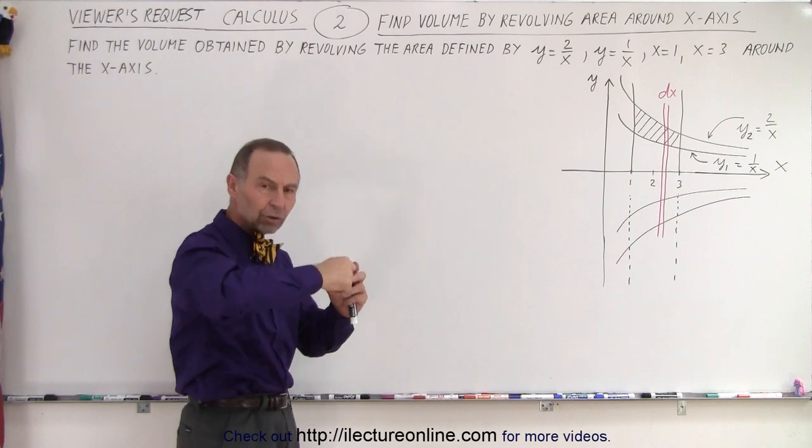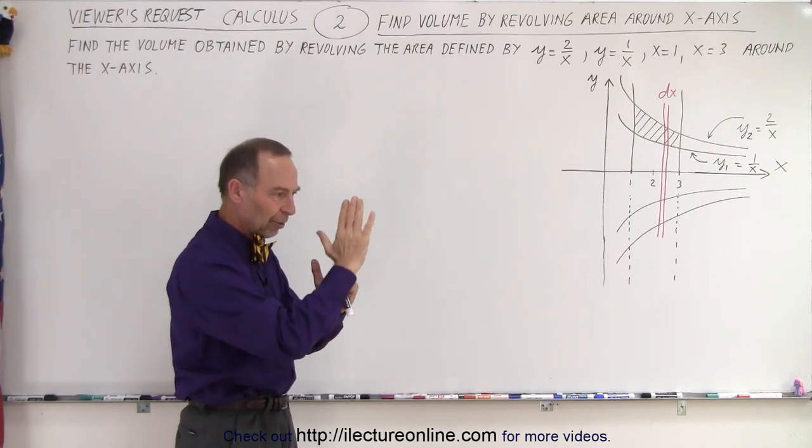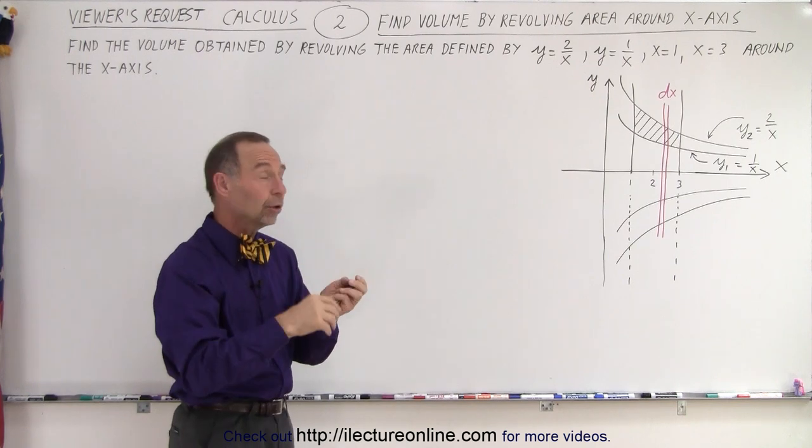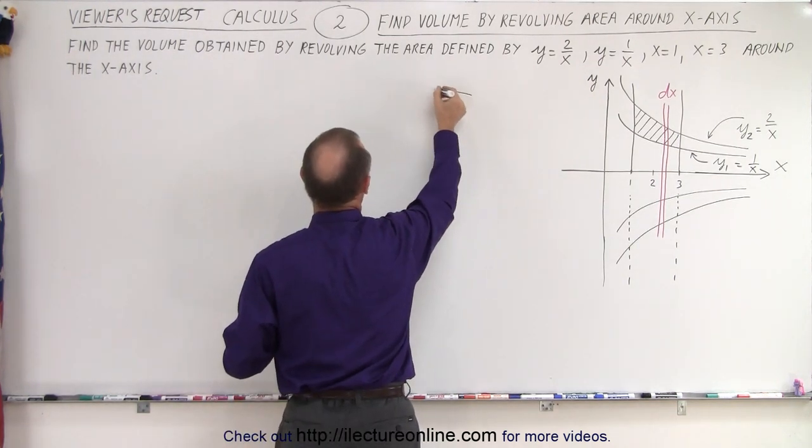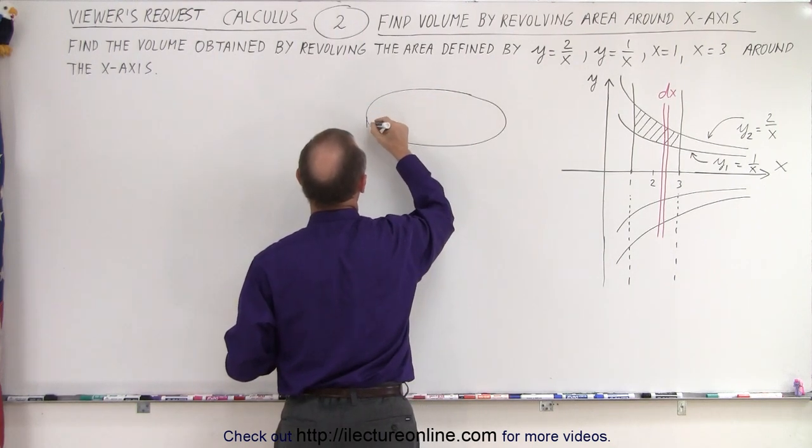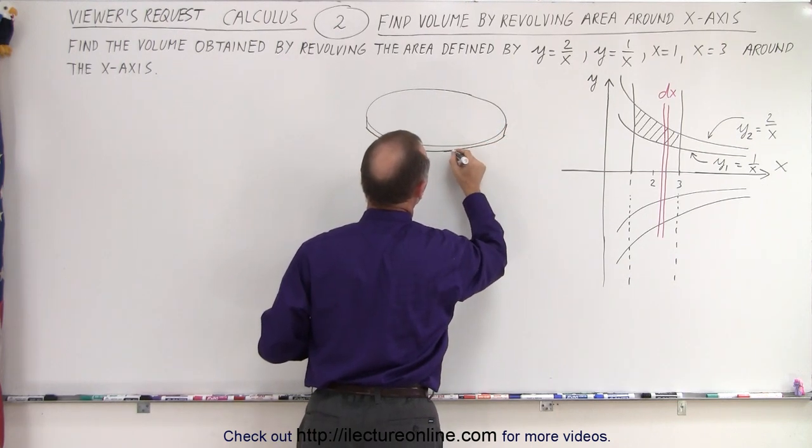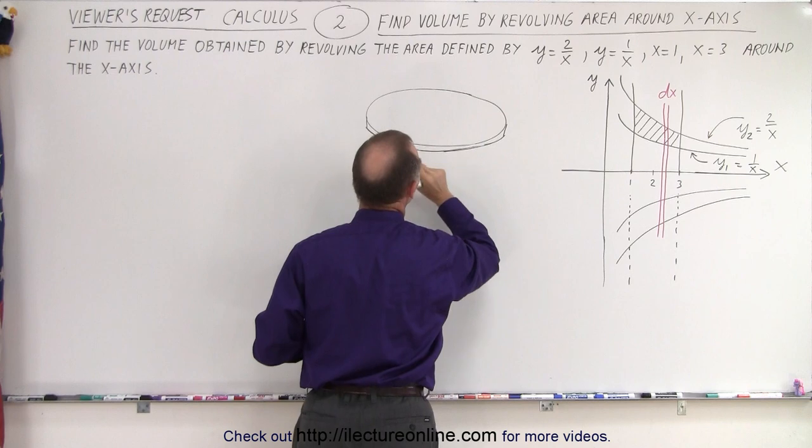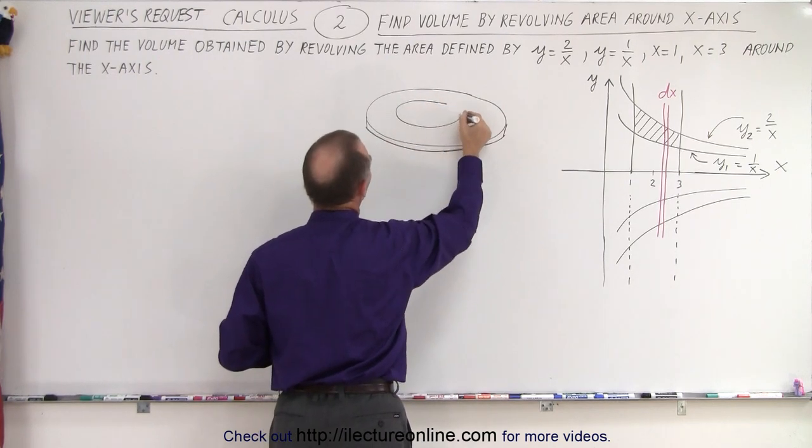A washer that's used when you screw something down. You want to protect the material you screw down with some hard metal that has a hole in it. The washer will look like this. We give it a little thickness, and then it has a hole in it in the middle.